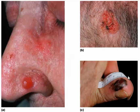And lastly, we have melanoma. Melanoma affects the melanocytes. It is the most dangerous, and it can be recognized by the ABCD or ABCDE method.